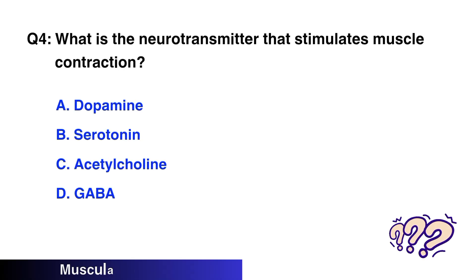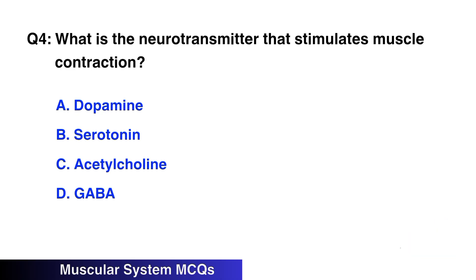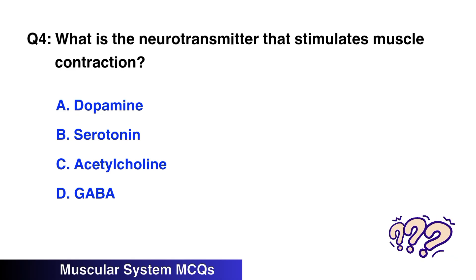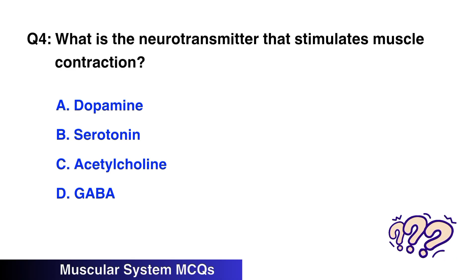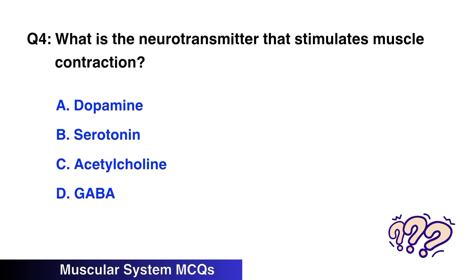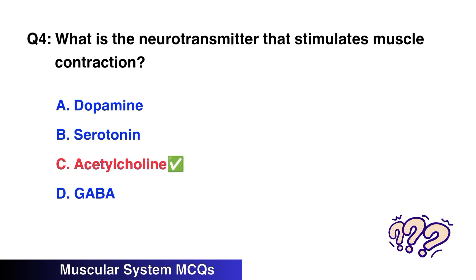Question No. 4: What is the neurotransmitter that stimulates muscle contraction? The right option is C: Acetylcholine.